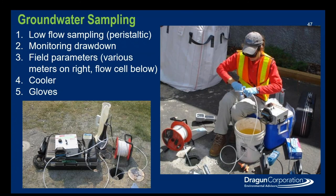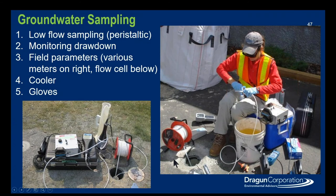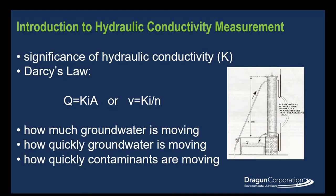When collecting our sample using low flow sampling, we monitor the drawdown of the water table and collect field parameters using different tools to get our chemistry. Once the chemistry is stabilized, we collect our samples in bottles and store them in coolers. Always make sure to use clean gloves between different stages of your sampling and before you collect your sample. Jason will now pass to Mike to talk about hydraulic conductivity measurements.